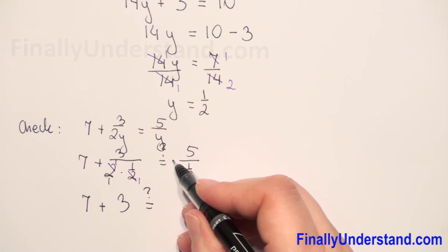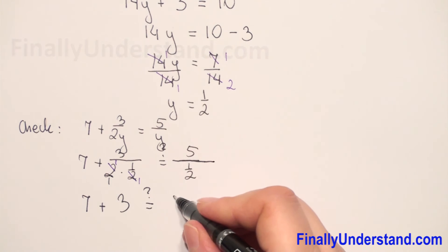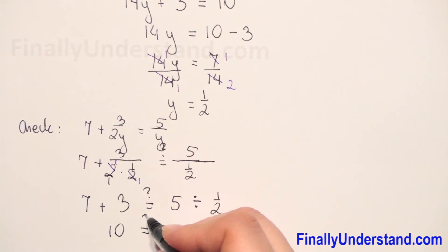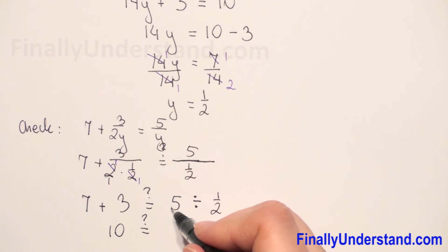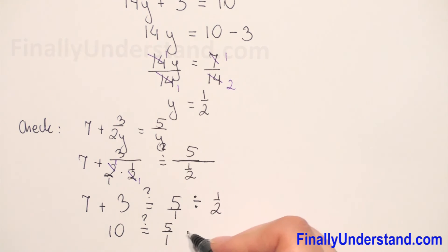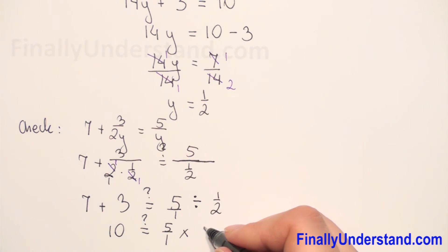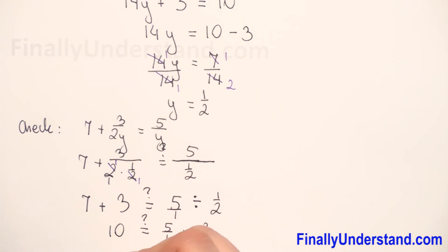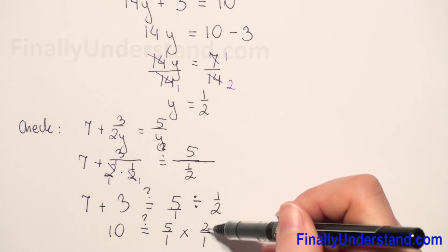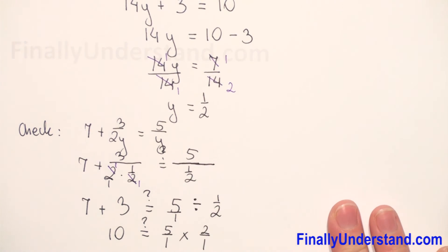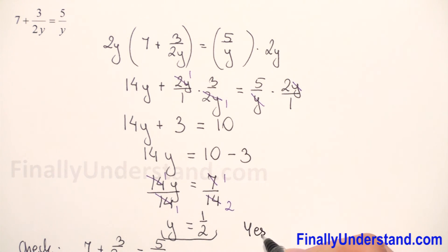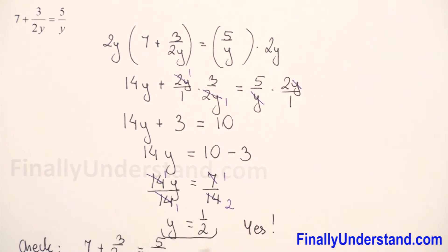On the right side we have 5 over 1 half, and this main fraction bar means division — so we have 5 divided by 1 half. We rewrite 5 as 5 over 1, and when dividing fractions we keep the first fraction, change division to multiplication, and flip the second fraction to get 2 over 1. So 5 times 2 is 10 over 1, which is 10. The left side equals the right side, which means y equals 1 half is the solution to our fractional equation.